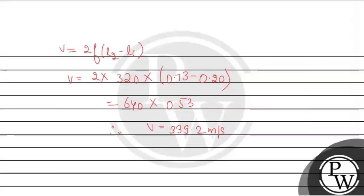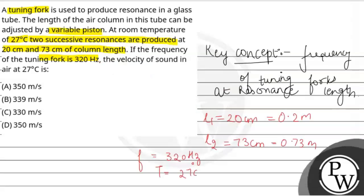So let us see which option is correct. Option number B, 339 m per second is the correct option. I hope you understood it well. Best of luck for your future.